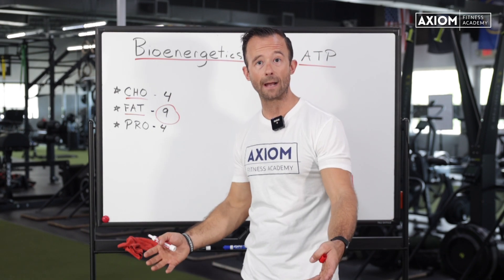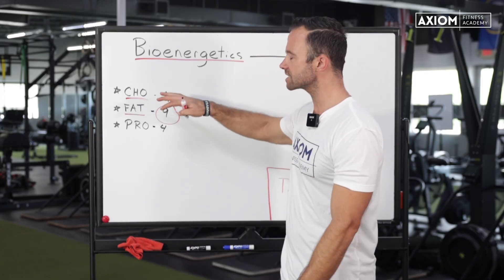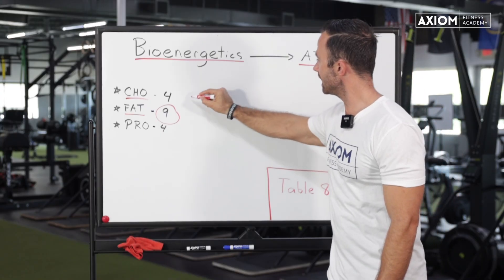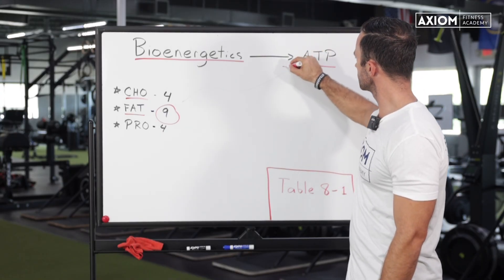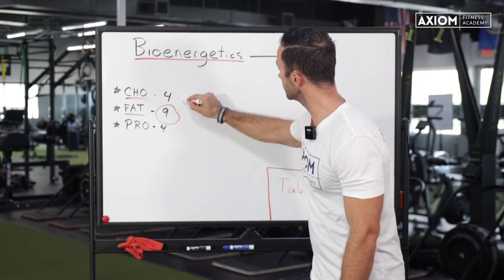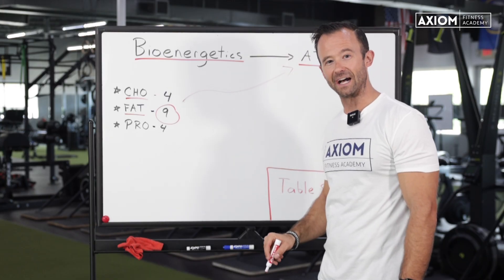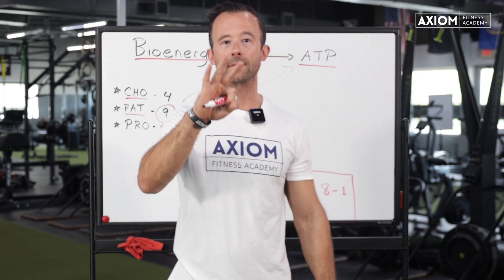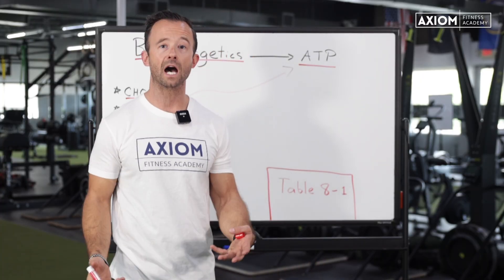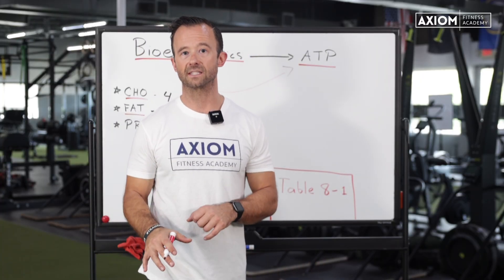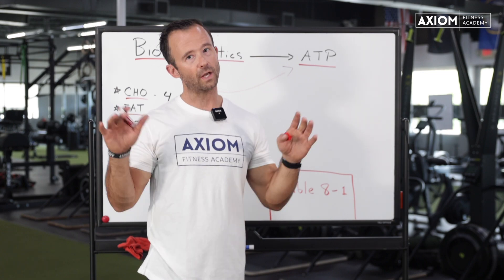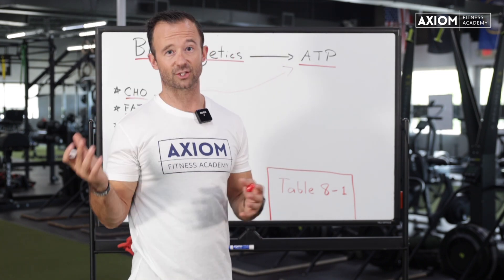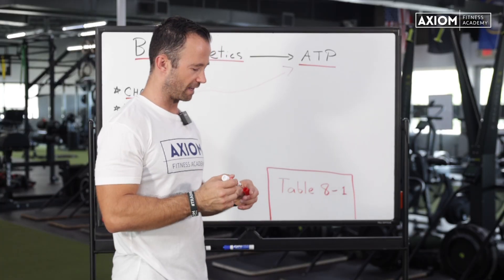This chapter doesn't talk a lot about nutrition — that's not the point. It's more about how our body turns these macronutrients into ATP, and we do that through our three primary energy systems. This is where a lot of people get caught up and maybe get lost on these concepts. I like to keep things simple, so I'm going to try to simplify this for you.